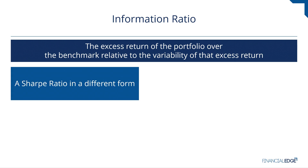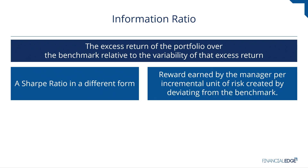Many see the information ratio as just a Sharpe ratio in a different form, but in the end it's tracking the amount of reward earned by a manager for every incremental unit of risk taken on. Here, the incremental unit of risk is created by how much the manager chooses to deviate from the benchmark.